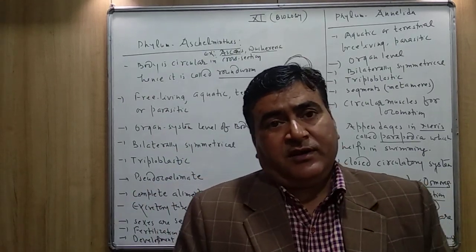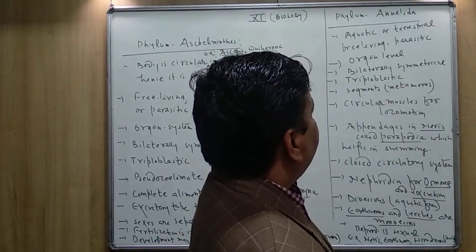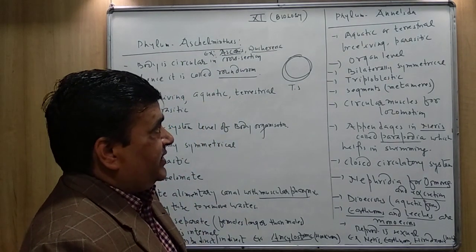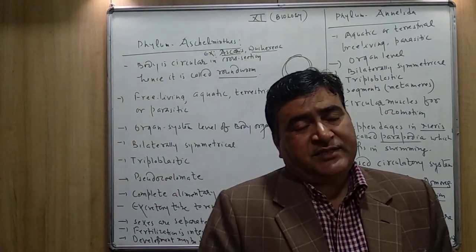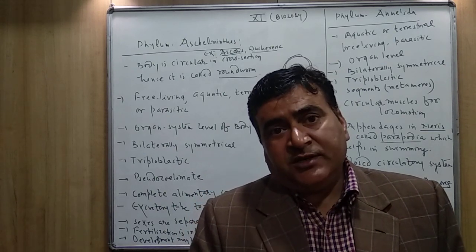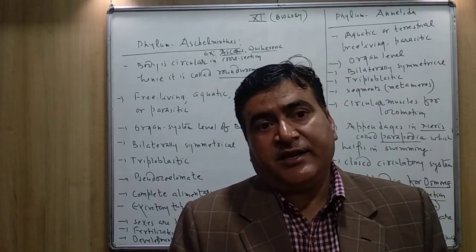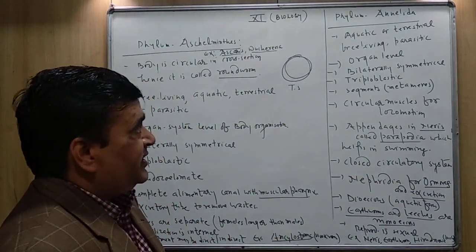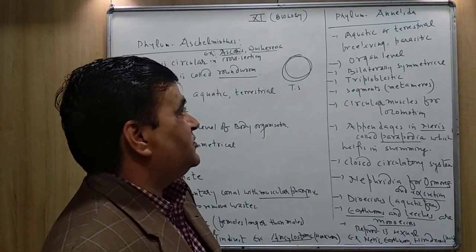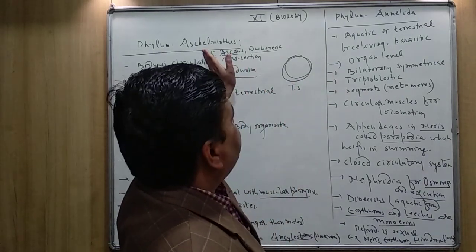Now let us start the next phylum: Phylum Annelida. Members of Phylum Annelida may be aquatic or terrestrial, free-living or parasitic — found in water or on land, or inside a host causing disease. The organ level of body organization is found here as well. The body is bilaterally symmetrical and they are triploblastic. So some features are common between Aschelminths and Annelida.